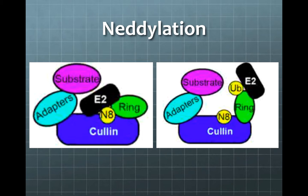This cartoon demonstrates the conformational shift that the E3 ligase undergoes after NEDDylation. The binding of ubiquitin to the E2 complex is opened up by this process. This subsequently allows for ubiquitination of proteins, which has roles in protein degradation, apoptosis, biogenesis of organelles and ribosomes, DNA transcription, and much more. This vast array of functions for ubiquitin makes the regulation of its attachment vital.